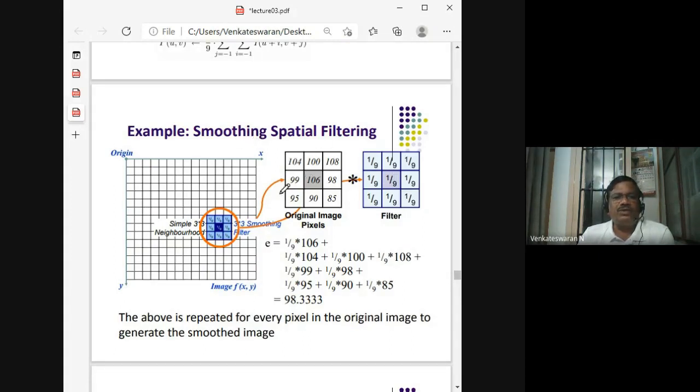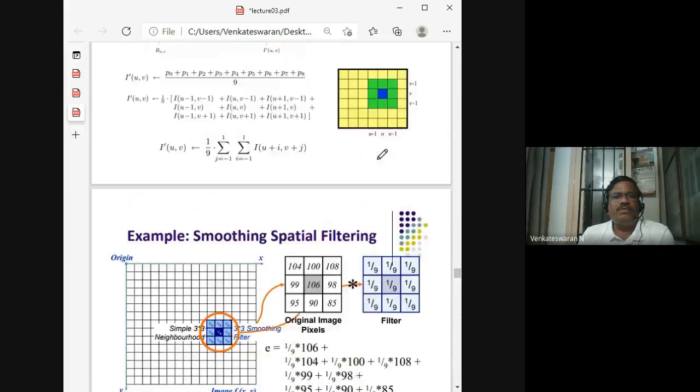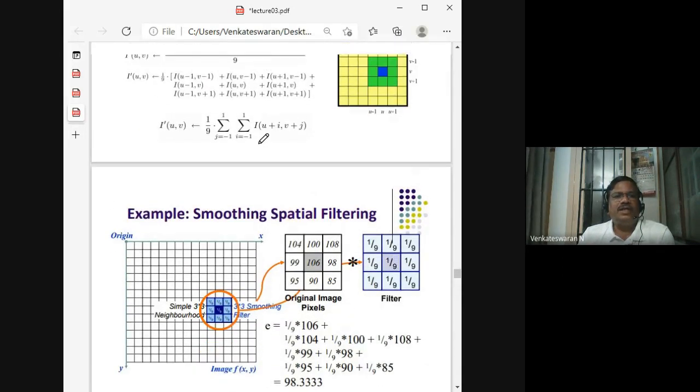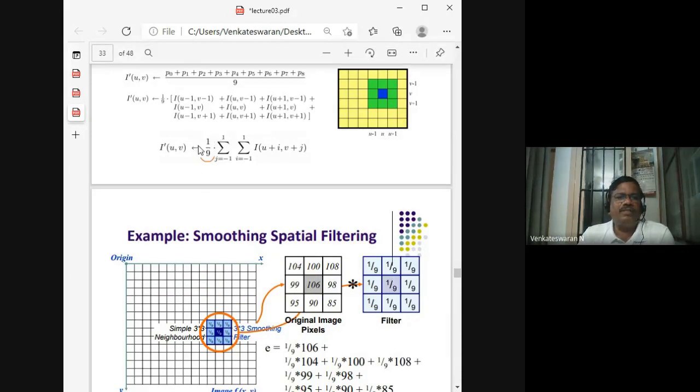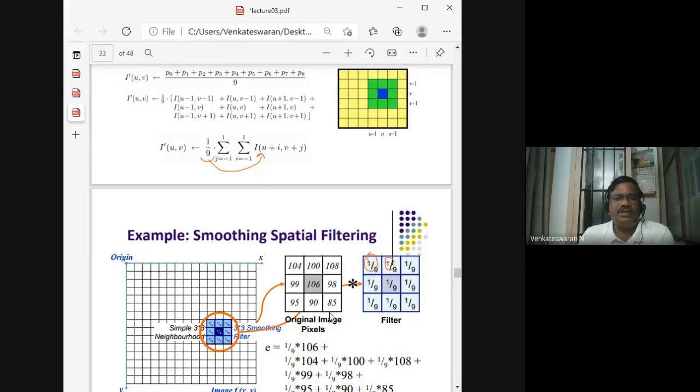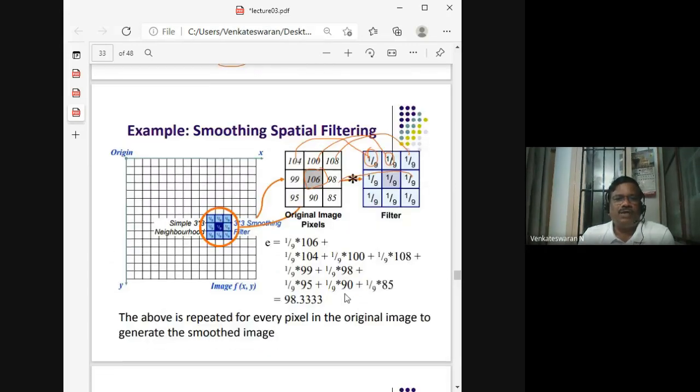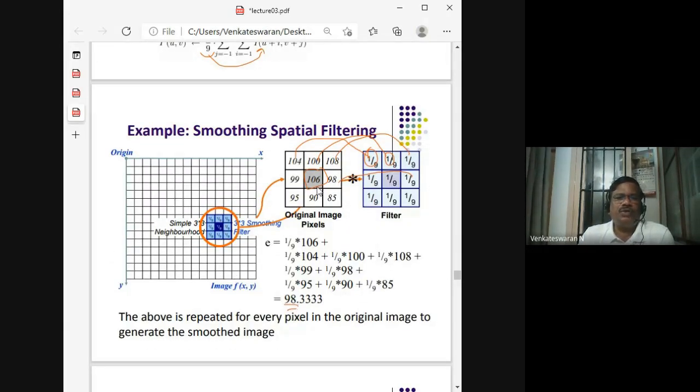You have these values as the values of the image, and this is what is called the filter values. Because you are operating on nine pixels you consider, you're dividing by nine. So it is possibly divide each pixel by nine, add them together. Essentially we are doing a point by point multiplication of these pixel values. So you are doing 98 times 1/9, and so on. Finally this 106 is a pixel value which we want to modify will get modified into, for example, 98.3.